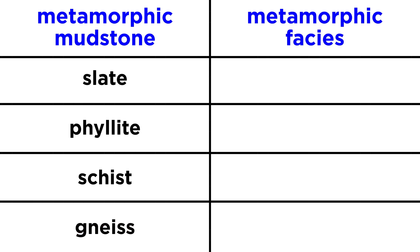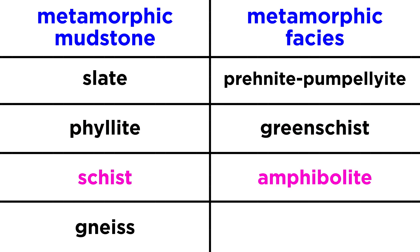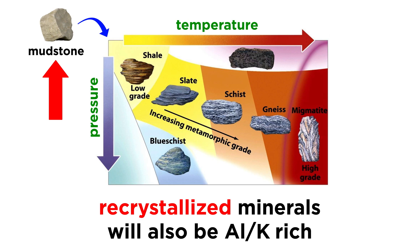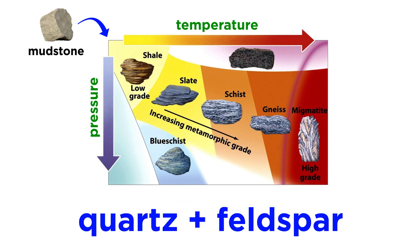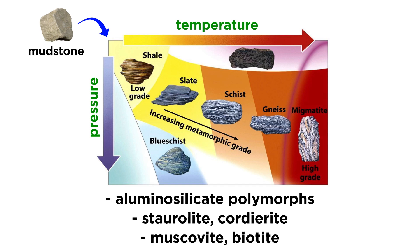We can relate these types of metamorphic rocks to our metamorphic facies. The following are equivalent: slate to prehnite-pumpellyite facies, phyllite to greenschist facies, schist to amphibolite facies, and gneiss to granulite facies. Being rich in aluminum and potassium, the minerals that recrystallize during metamorphism will also be rich in these elements. In addition to quartz and feldspar, aluminum-rich minerals like the aluminosilicate polymorphs, staurolite, and cordierite, and potassium-rich sheet silicates like muscovite and biotite commonly occur in these rocks.